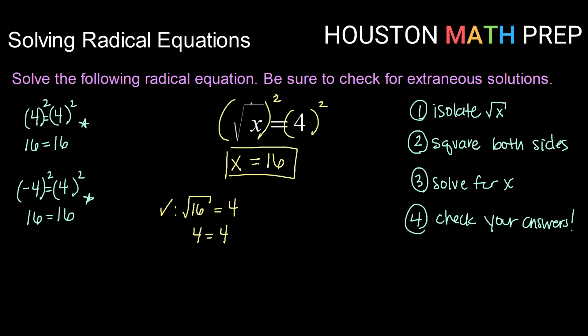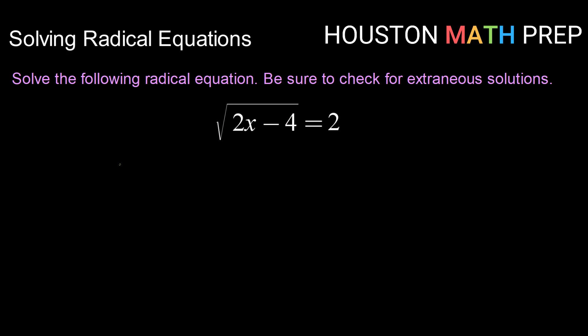Okay, so let's see that with a bit more complex one. Alright, here's our next one. Square root of 2x minus 4 equals 2.